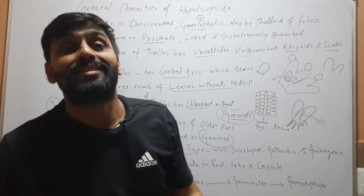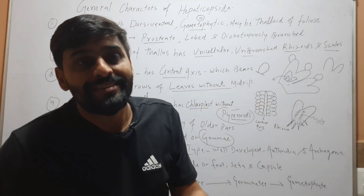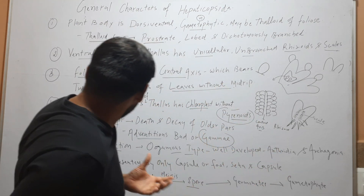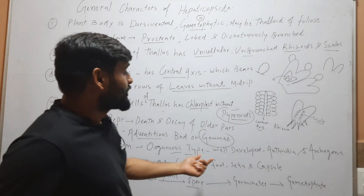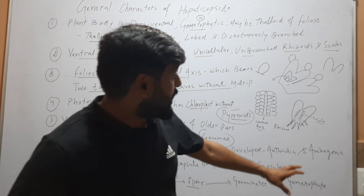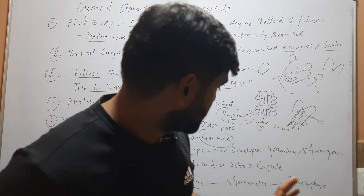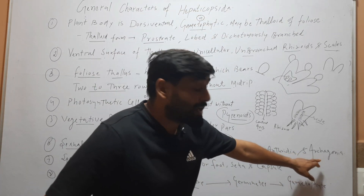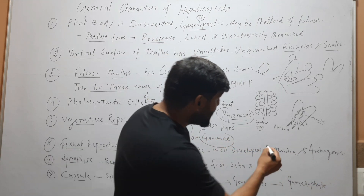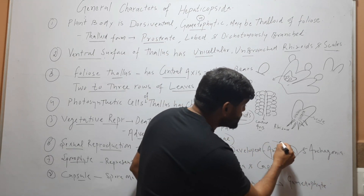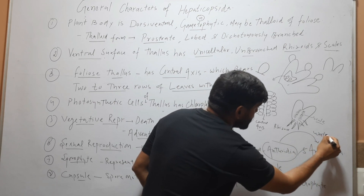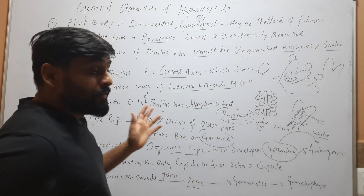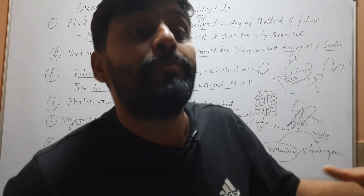Sexual reproduction is of the oogamous type, in which the male gamete is smaller in size and motile, while the female gamete or egg is larger and non-motile. In sexual reproduction, antheridia — the male reproductive structure — and archegonia are well developed. Antheridia produce motile male gametes and archegonia produce the egg. The male gametes from the antheridia reach the archegonia through water, so water is essential for fertilization. When fertilization occurs, a zygote is formed.